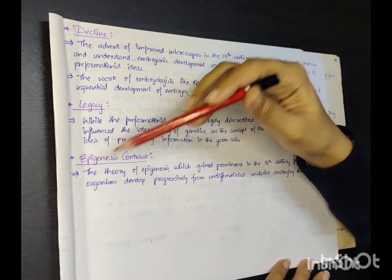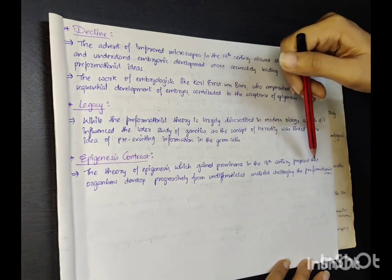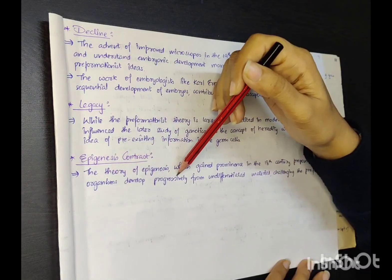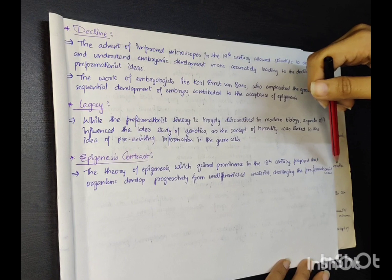Epigenesis contrast: The theory of epigenesis, which gained prominence in the 18th century, proposed that organisms develop progressively from undifferentiated materials, challenging the pre-formationist view.